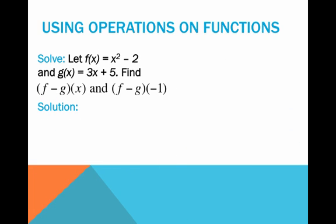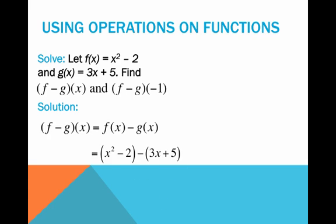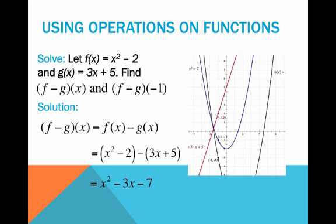Let's look at subtraction. With the same functions, let's find (f−g)(x). That's just f(x) minus g(x), so I'm substituting in f and g, but now I have a minus in front of that second parentheses. Note that I used parentheses when substituting because that minus has to hit every single term in g. That 3x has to become negative, and that 5 has to become negative. When that 5 becomes negative and I combine it with negative 2, I get the constant term of negative 7.